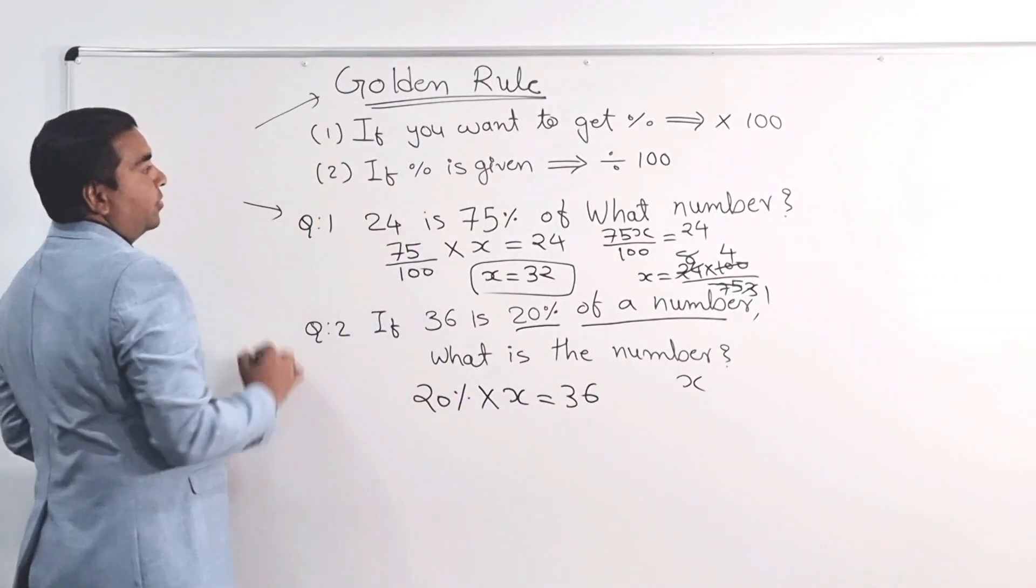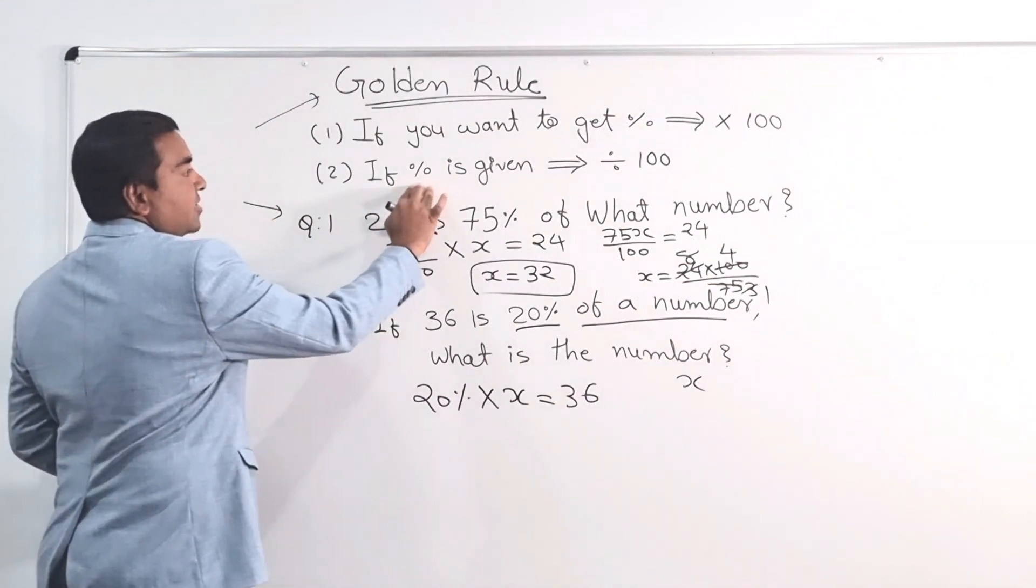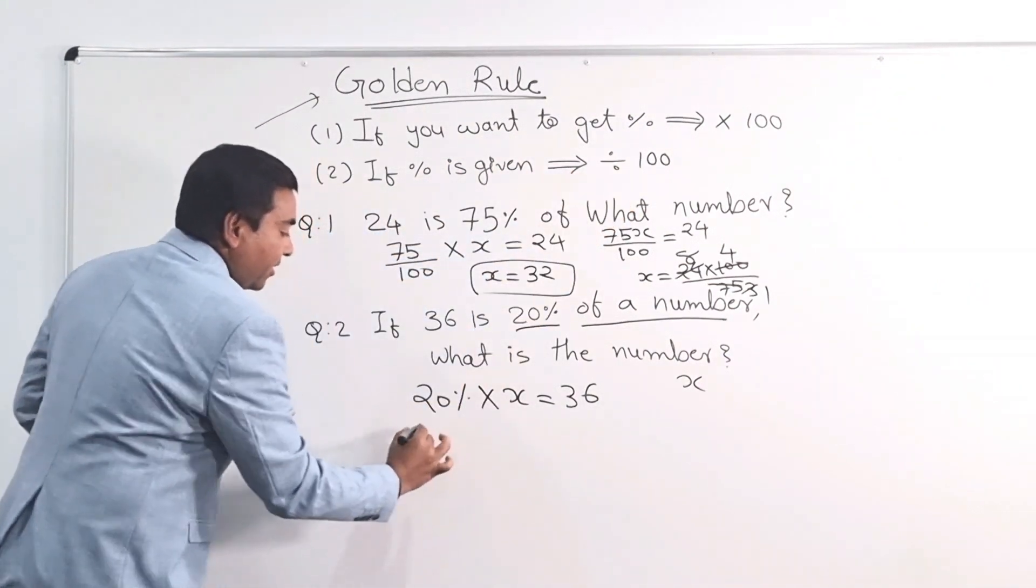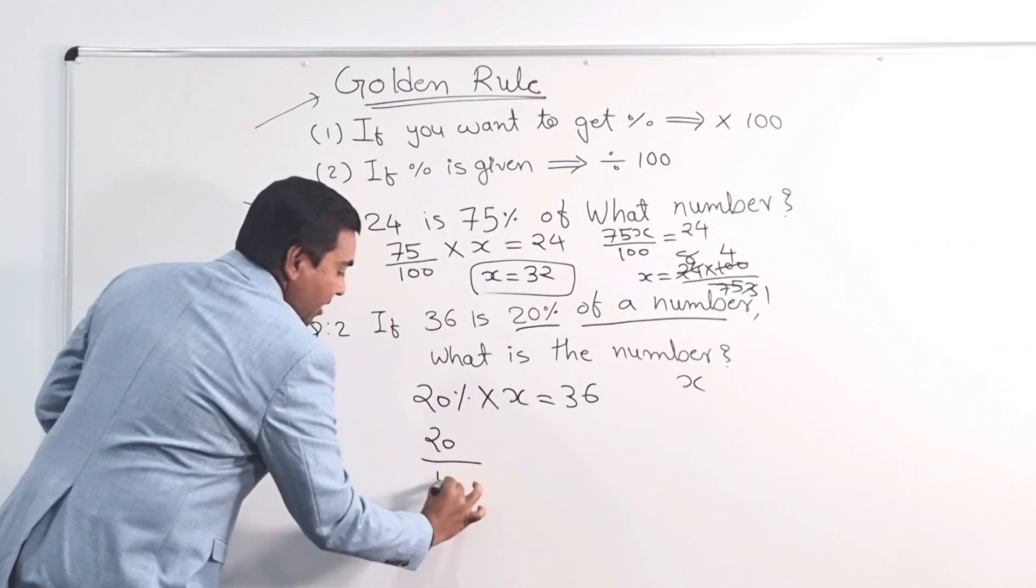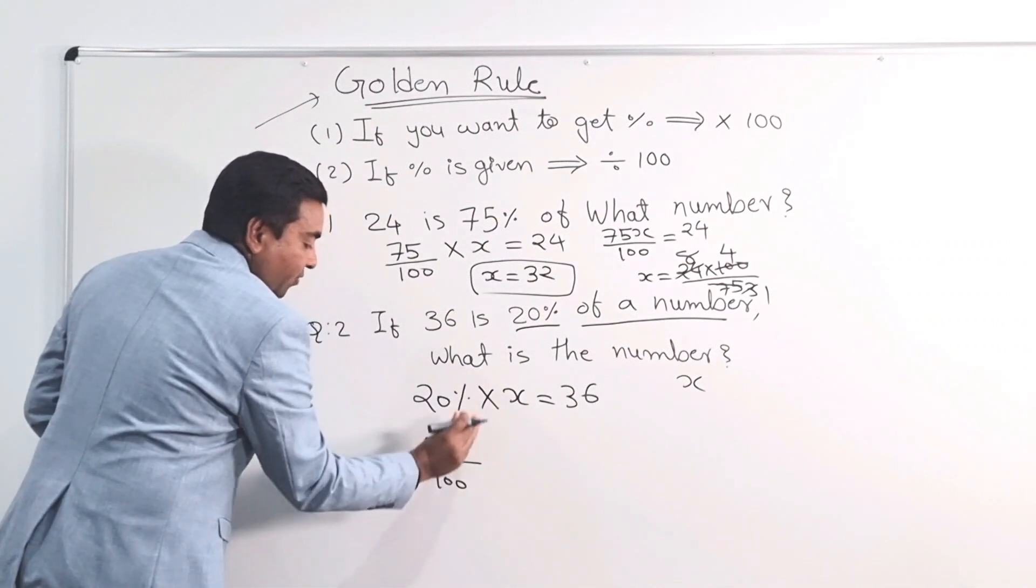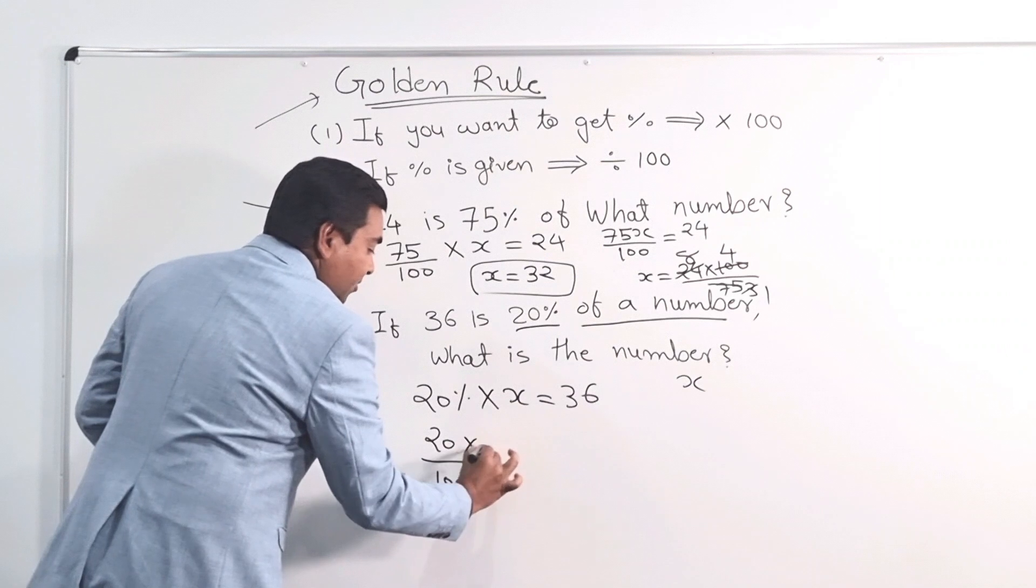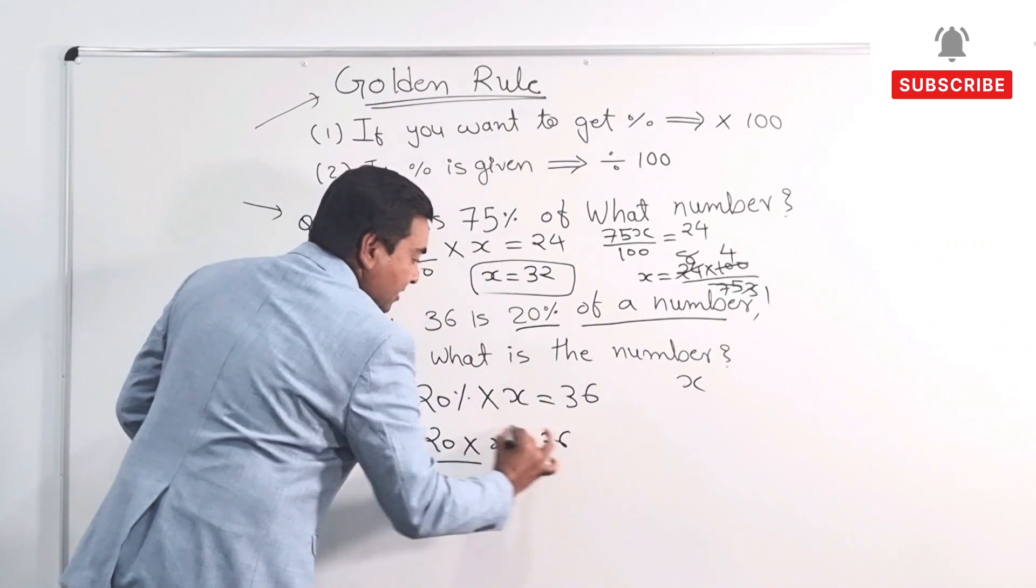Going back to my golden rule. If percentage is given, you can divide by 100. So 20 divided by 100. I'm taking percentage sign off. And I can divide by 100 times it by X and that is equal to 36.